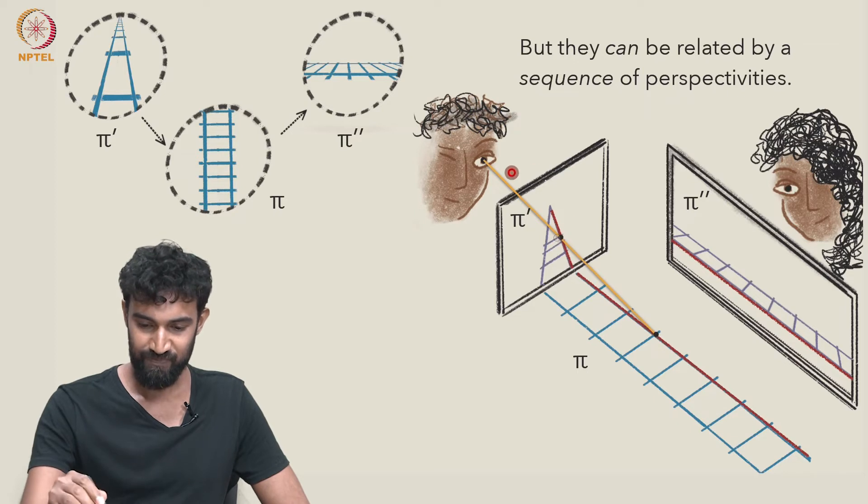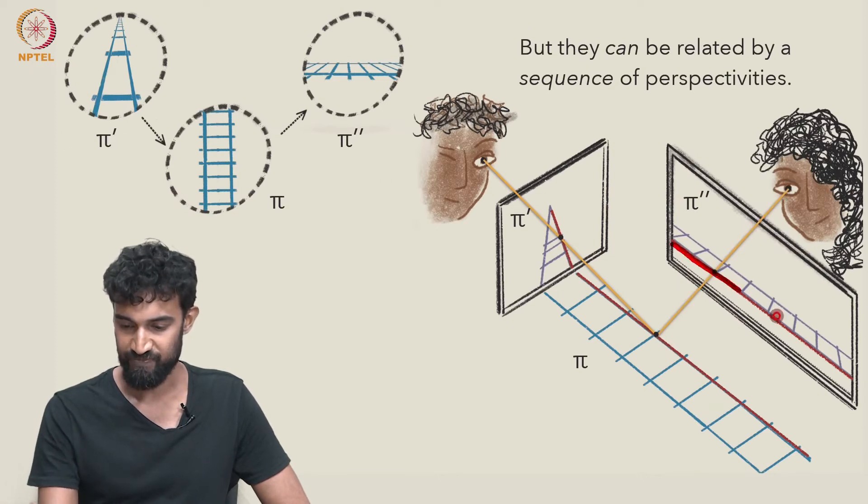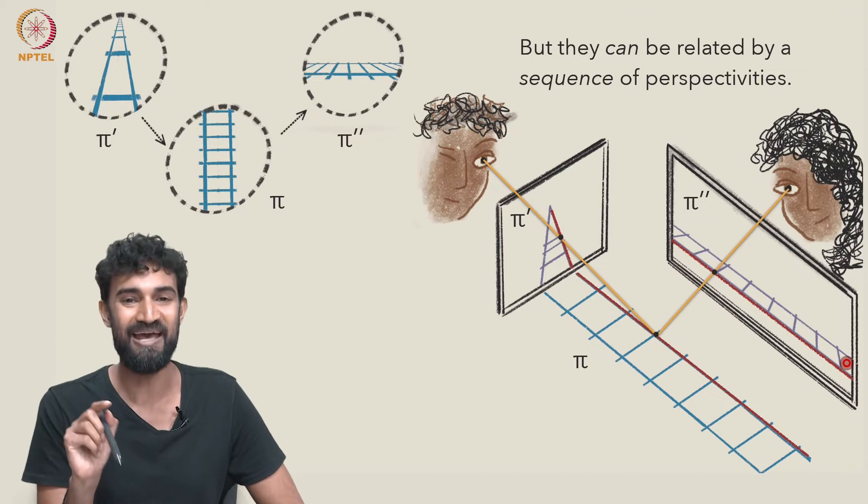So like this point here would map down to this point here, which would then map up to this point here. So via two perspectivities, we can do it.